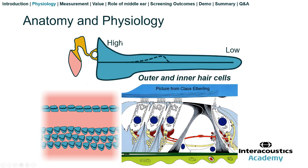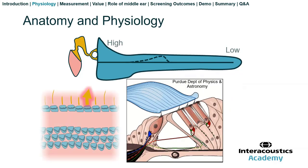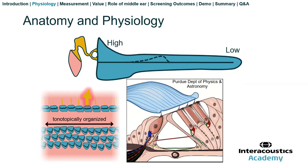The cochlea is organized by frequency along its length. If you take that coil and roll it out, you see that high frequencies are represented at the base by outer hair cells sensitive to high frequencies, and at the apex there are hair cells sensitive to low frequencies. Looking at the basilar membrane from the top down with the tectorial membrane stripped off, you'll see three rows of outer hair cells and one row of inner hair cells. For a given frequency, activation of certain outer hair cells results in activating certain inner hair cells at that same frequency.